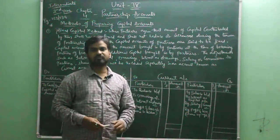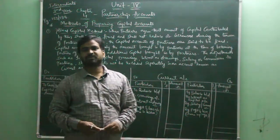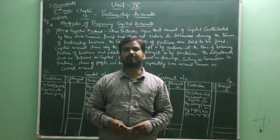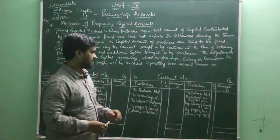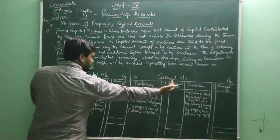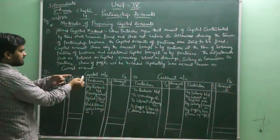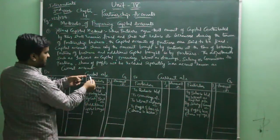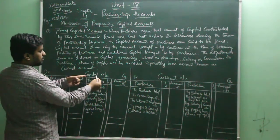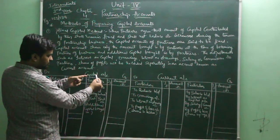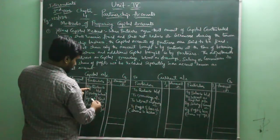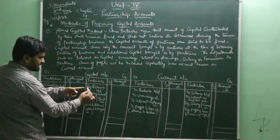How do we prepare capital accounts under the fixed capital method? Under the fixed capital method, we maintain two accounts — one is the capital account and the other is the current account. Under the capital account, only the balances which the partners have introduced at the time of becoming partners will be shown, along with any additional capital.